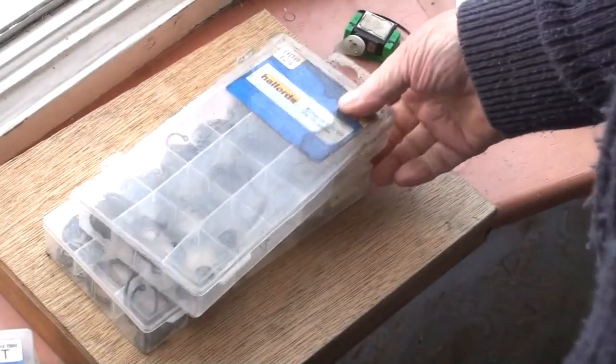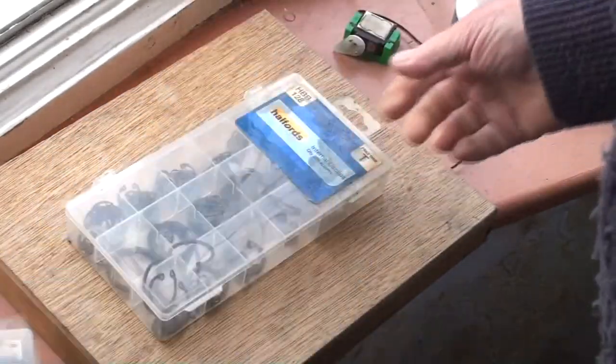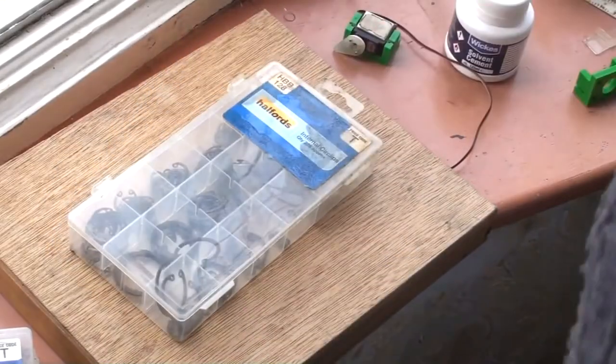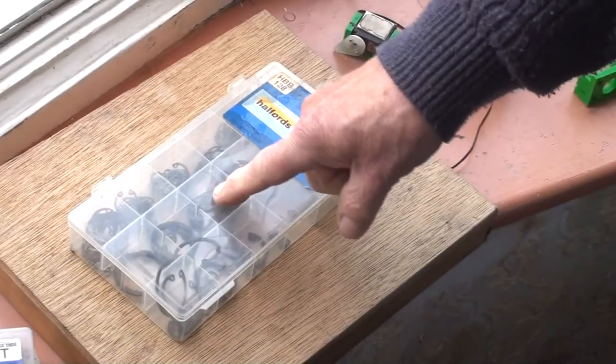You can get these little boxes in a number of places, outlets. In particular, these are from Halfords—various little fiber washers or whatever, spring clips and so on.